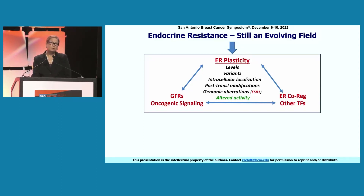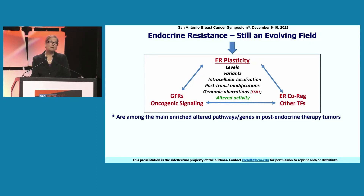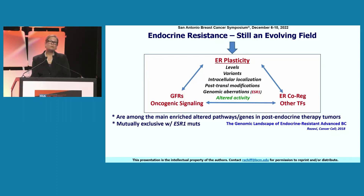Our studies showed that there are two major groups of proteins that, via multidirectional crosstalk, can modulate or regulate this ER plasticity: growth factor receptors and downstream oncogenic signaling, as well as ER co-regulators and other transcription factors. Genes that constitute these two nodes have recently been shown, along with genomic aberrations in ESR1, to be among the main enriched altered pathways in post-endocrine therapy tumors, as reported by Razavi et al. They further showed mutual exclusivity of mutations in these genes compared with ESR1 mutations, suggesting independent drivers of resistance.